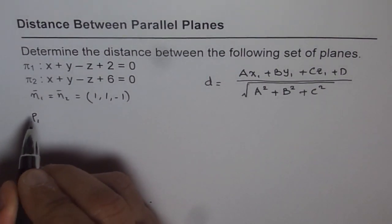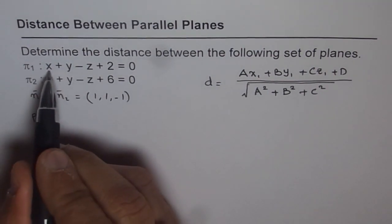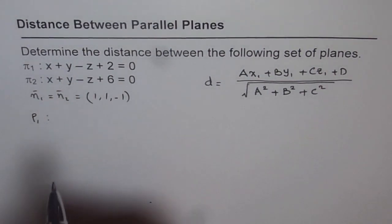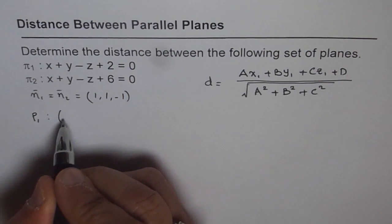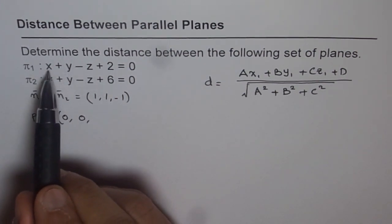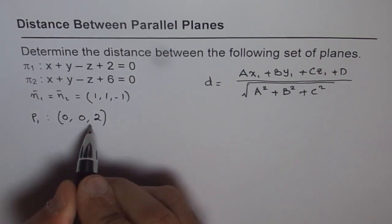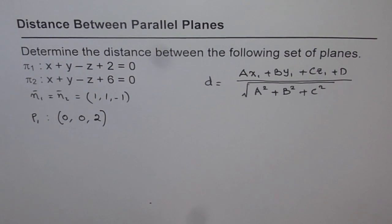Let's do that point on plane 1. So let's say P1 is point on plane 1, and if we substitute x equals to 0, y equals to 0, what do we get? We get x equals to 0, y equals to 0, then we get z equals to 2. So the value for z is 2.